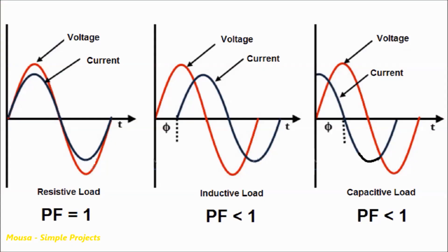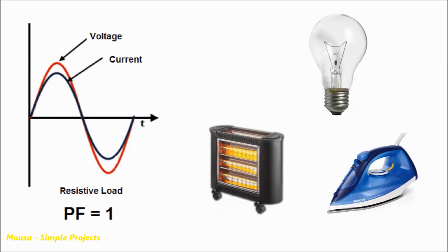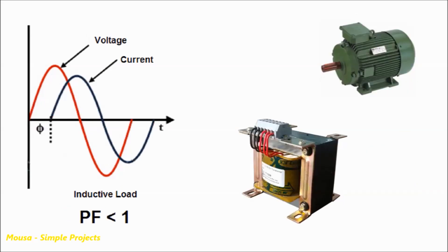The power factor is a number from 0 to 1, which refers to the phase shift between voltage phase and current phase in AC appliances. The power factor in resistive loads such as incandescent lamps and heaters is equal to 1 — that means there is no phase shift between the voltage phase and current phase. But the power factor in inductive loads such as motors and transformers is less than 1 because the voltage and current are out of phase.